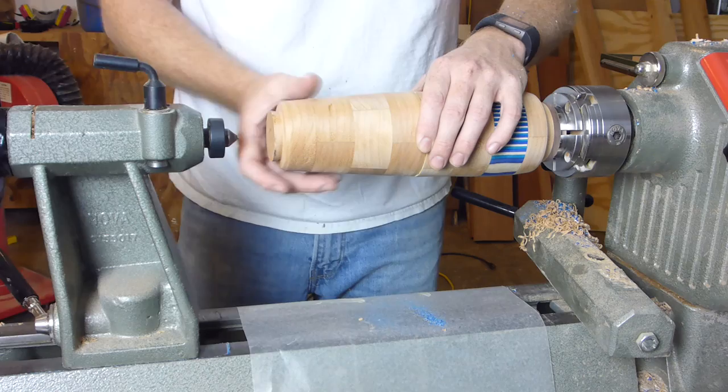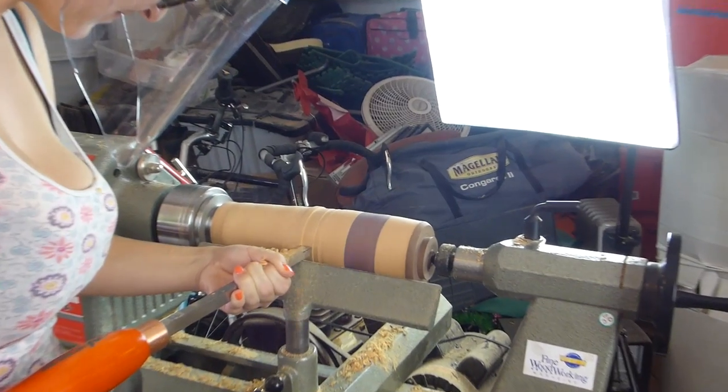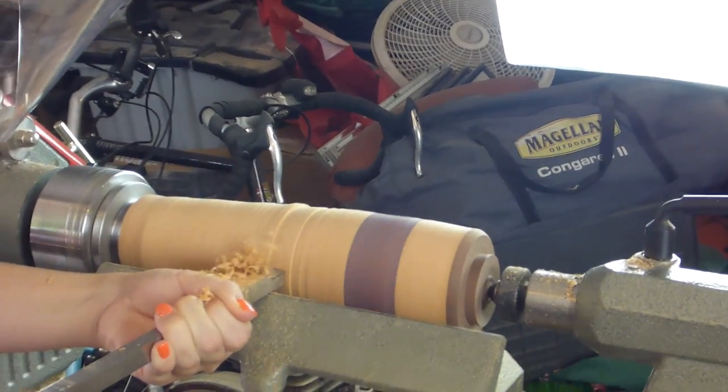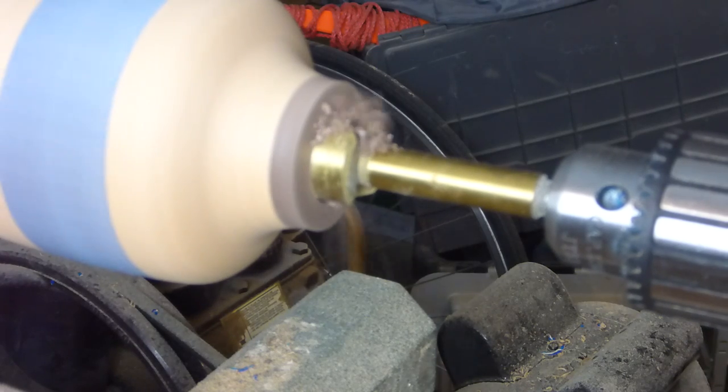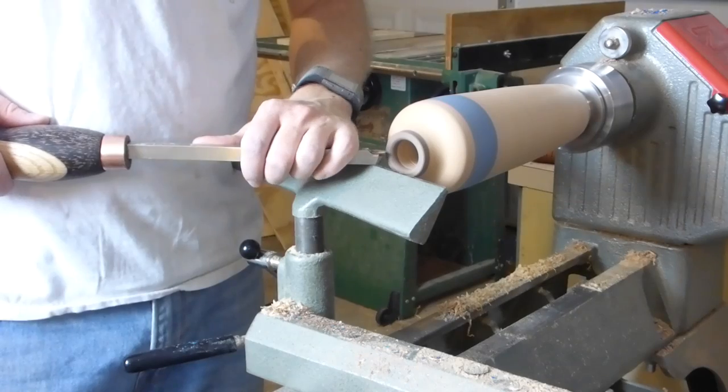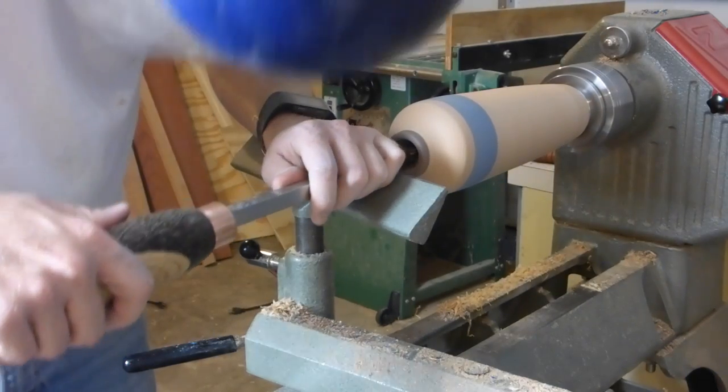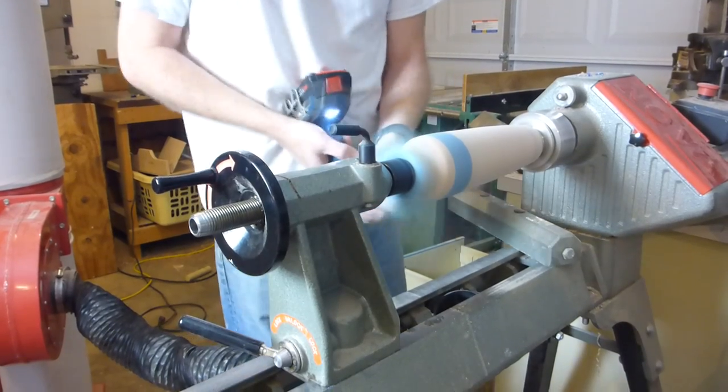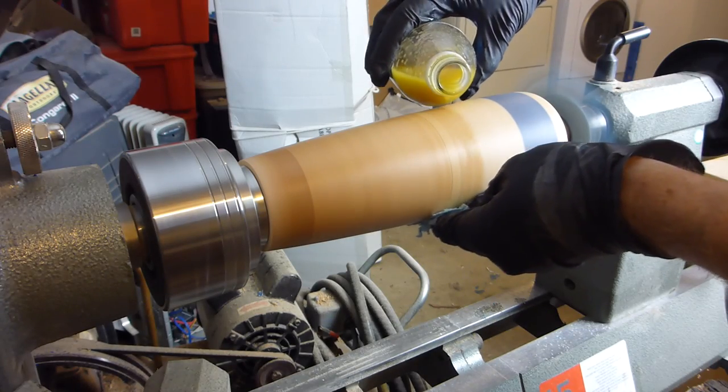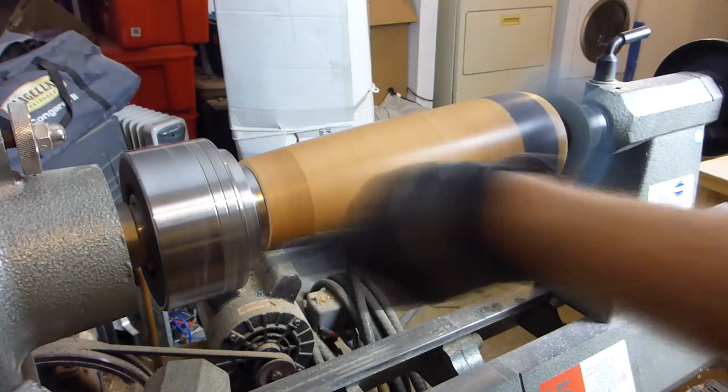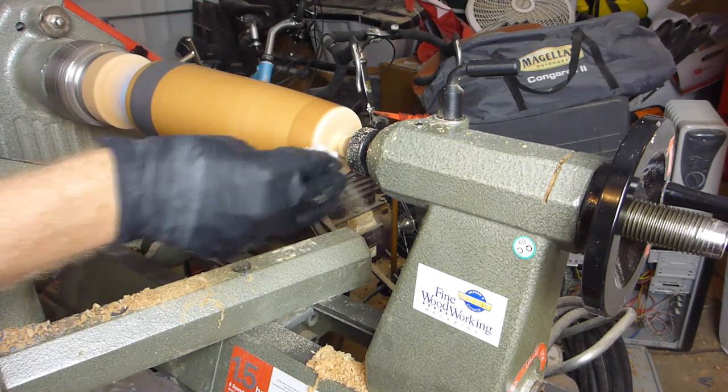So we glued the halves into a whole and remounted for final shaping. We did the outside first. My wife's getting the hang of this now. Then we drilled out the top and finished the rim, a little bit of sanding, and some friction polish as a finish. I turned it around the other way with a jam chuck and cleaned up the bottom.